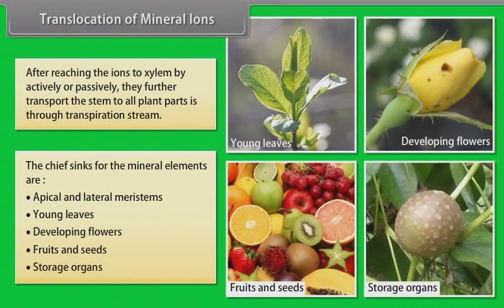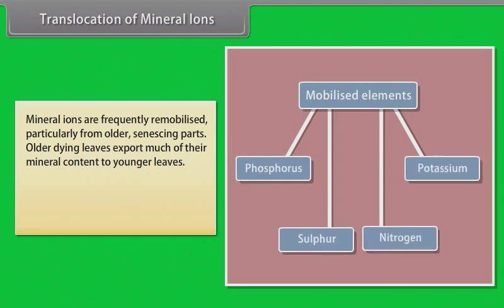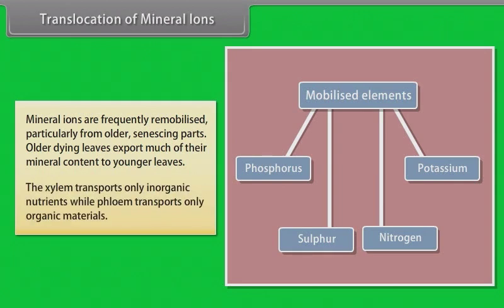fruits and seeds, and the storage organs. Mineral ions are frequently remobilized, particularly from older senescing parts. Older dying leaves export much of their mineral content to younger leaves. Similarly, before leaf fall in deciduous plants, minerals are removed to other parts. Elements most readily mobilized are phosphorus, sulfur, nitrogen, and potassium. Some elements that are structural components, like calcium, are not remobilized. So, the xylem transports only inorganic nutrients, while phloem transports only organic materials.